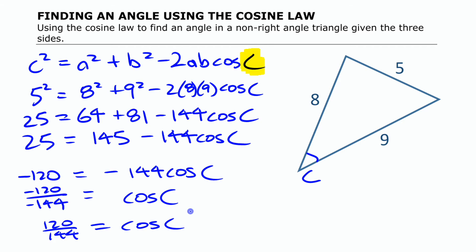And just like when you find an angle with the sine law, now what you're going to do is you're going to use the inverse trig function to find the value. So I'm going to say that if cosine of C is that, then C is cos inverse of 120 over 144.